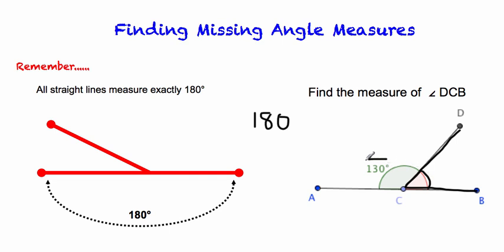We're going to subtract 130 from 180. So we do 180 minus 130, and we will end up with 50 degrees.